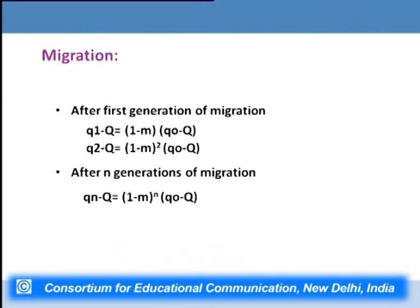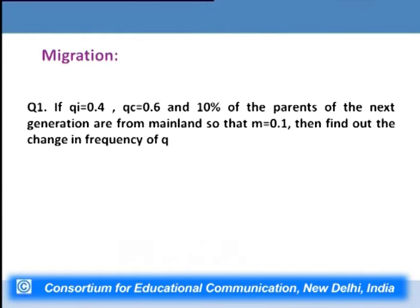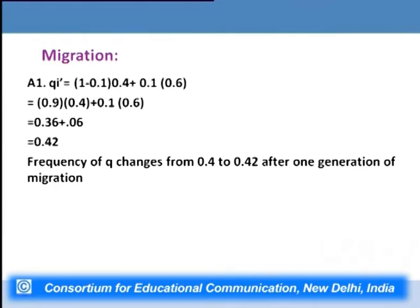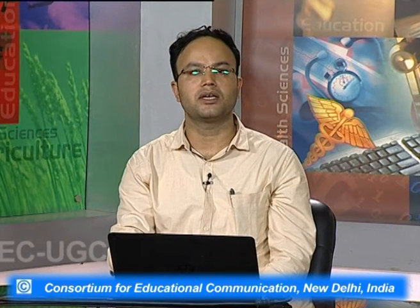After n generations of migration, allelic frequency is given by: qₙ − Q = (1 − m)ⁿ·(q₀ − Q). For example, if qᵢ = 0.4 and qc = 0.6 with a migration rate m = 0.1 (10% of parents of the next generation are from mainland), then q′ = (1 − 0.1)·0.4 + 0.1·0.6 = 0.36 + 0.06 = 0.42. So frequency of q in the island changes from 0.4 to 0.42 after one generation of migration.